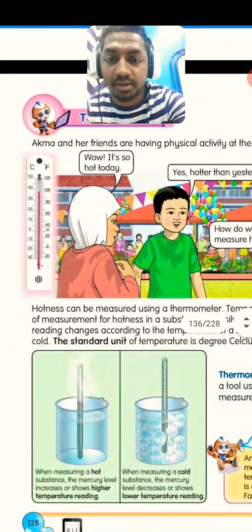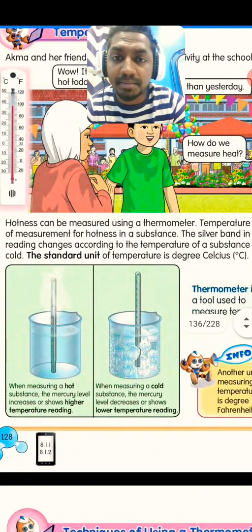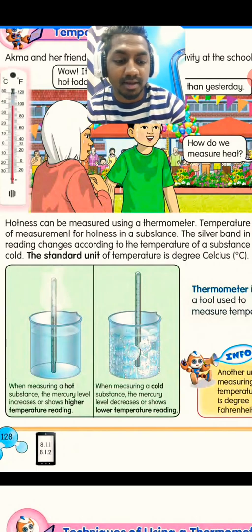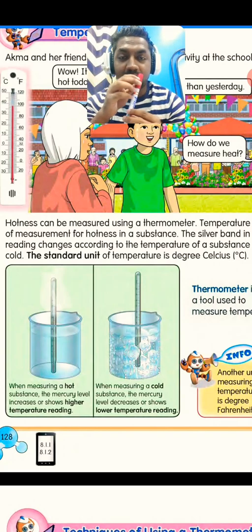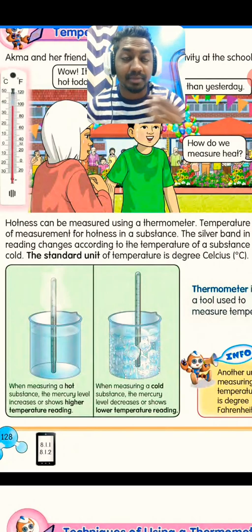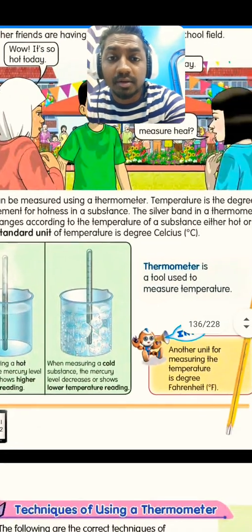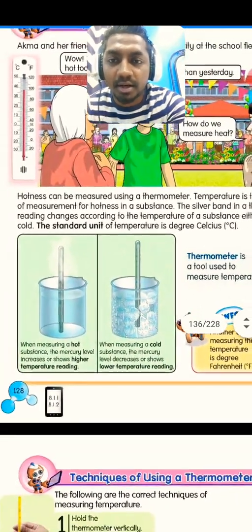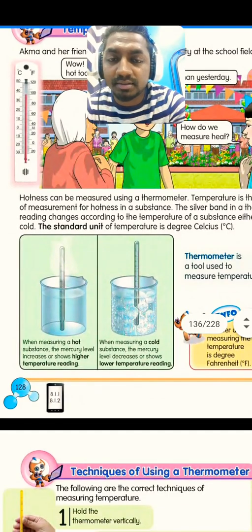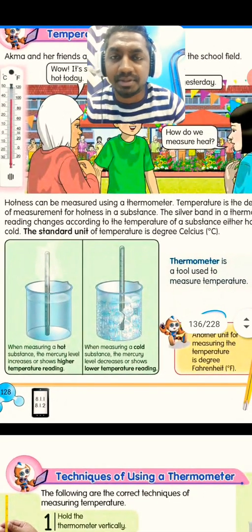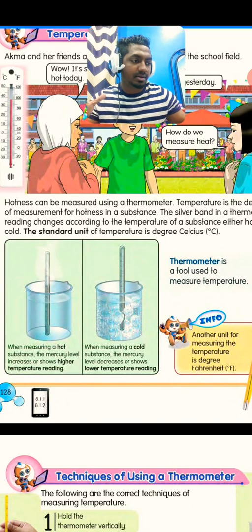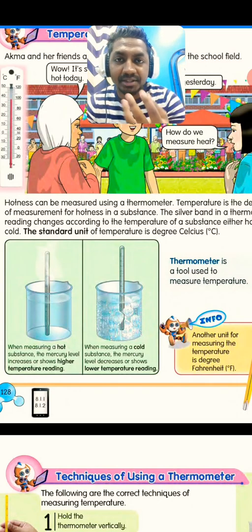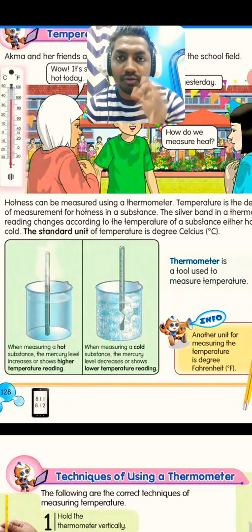Temperature is the degree of measurement for hotness in a substance. Hotness can be measured using a thermometer. I don't have a thermometer right now, so I'm using a marker pen to demonstrate how to use one. For example, just like we measure the distance between two points for length, we use temperature to measure the hotness of an object.